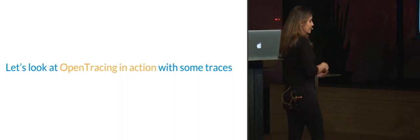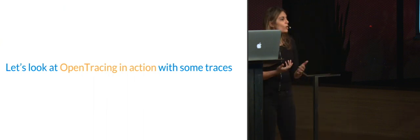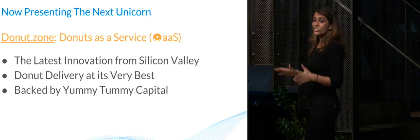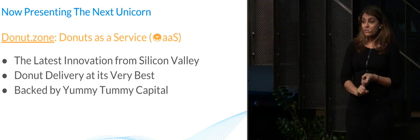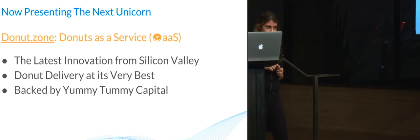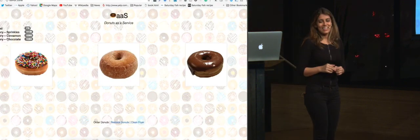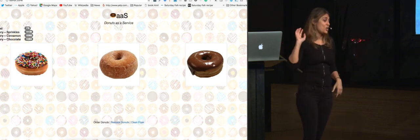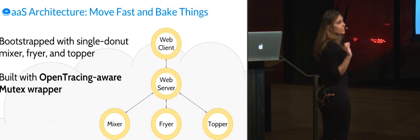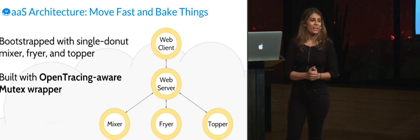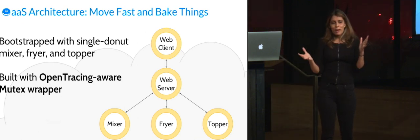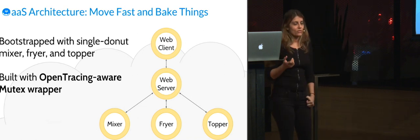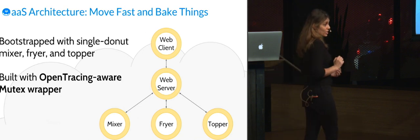So that all sounds great — clearly there's some social proof and people seem to like it. But what does this really mean? Let's look at OpenTracing in action with some traces. I'm now presenting to you the next unicorn of Silicon Valley: Donut Zone, which is a DAS — Donuts as a Service. It's the latest innovation: donut delivery at its very best, backed by Yummy Tummy Capital. This is the beautiful application we have built, and through this you can order virtual donuts. I'm going to be asking you guys for help very soon to help me create a success disaster on Donut Zone. I quickly want to explain the DAS architecture, which is built to move fast and bake things. We have bootstrapped with a single donut mixer fryer topper — startup life. But the good news is that we've built with OpenTracing, and there's an OpenTracing-aware mutex wrapper included, so it will hopefully help us debug any issues that may come up.